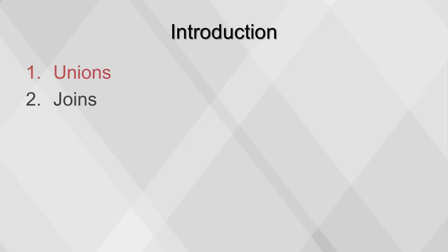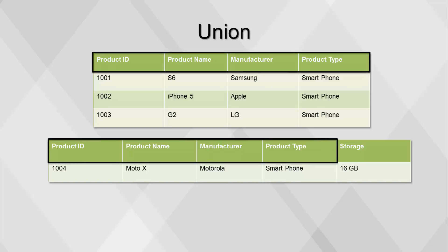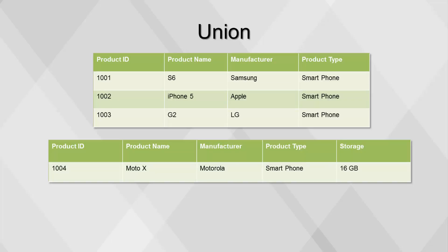This video will cover Unions and Joins. Union is also referred to as appending, concatenating, or combining two tables vertically, or simply adding rows. The tables should have the same variable names, types, and sizes. Variables that are in only one table will receive null or missing values for the rows from the tables that do not contain them.